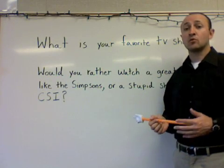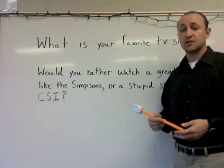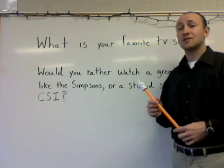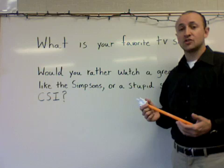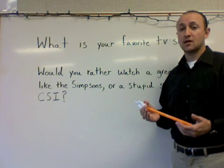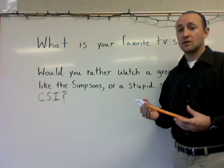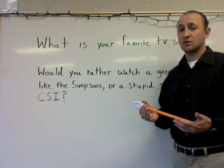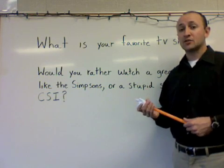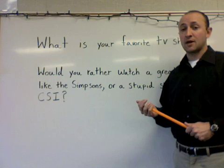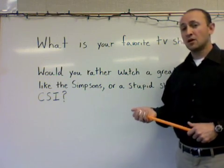The next basic element we're going to look at that involves statistics is what's called a sampling error. A sampling error is pretty much just a mistake made in a question that you would ask somebody on a survey. It usually would lead to a biased result, and we know that a biased result is an unfair result.